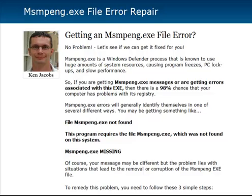Chances are if you're getting any kind of MsMpEng messages, errors, or anything associated with it, then it's a very high probability that your computer has registry problems. If that's the case, you're going to be getting things like 'MsMpEng.exe is not found' or 'the program requires the file MsMpEng.exe which wasn't found in your system.' You may get a file missing error or something completely different, but if it's referencing the MsMpEng .exe file, then you know it's a registry issue.